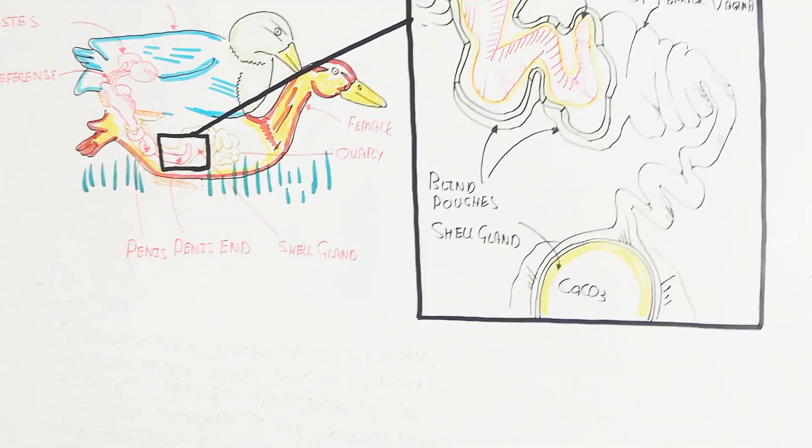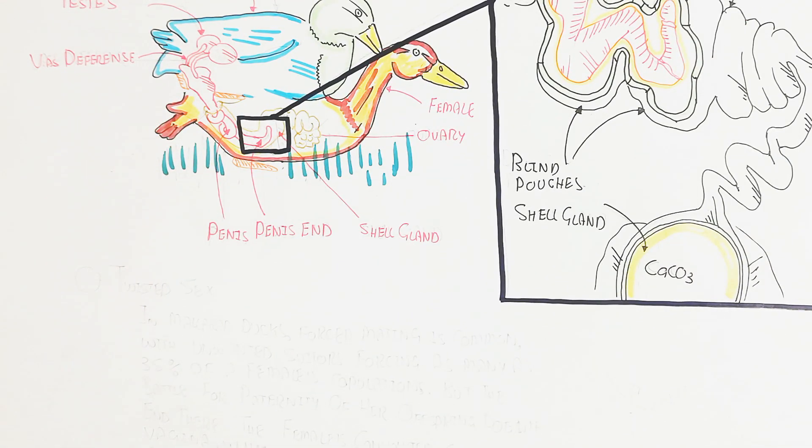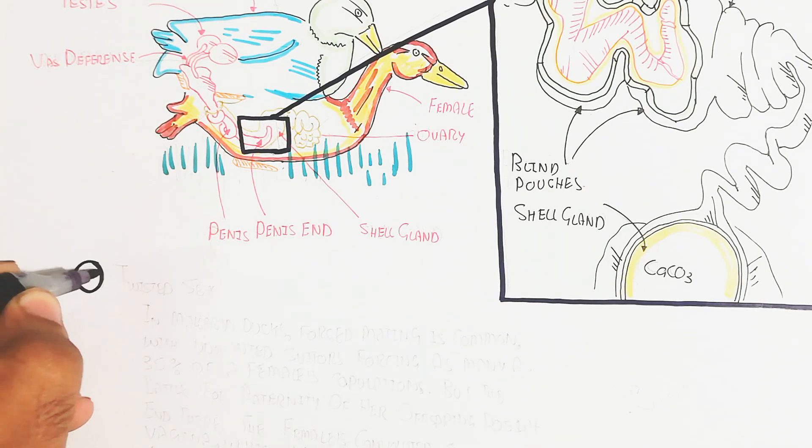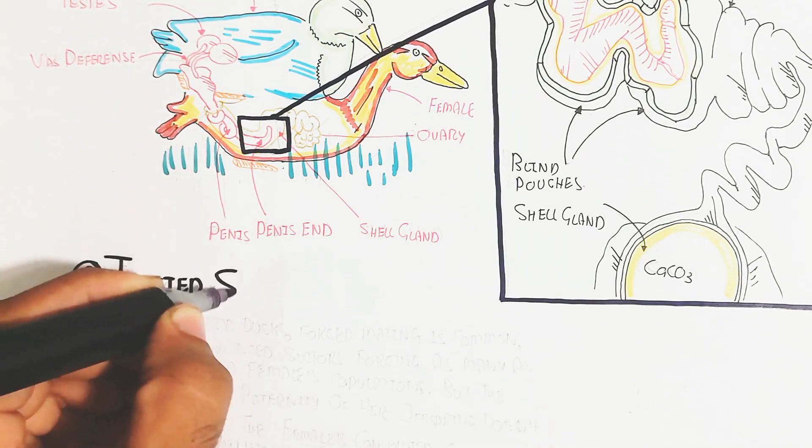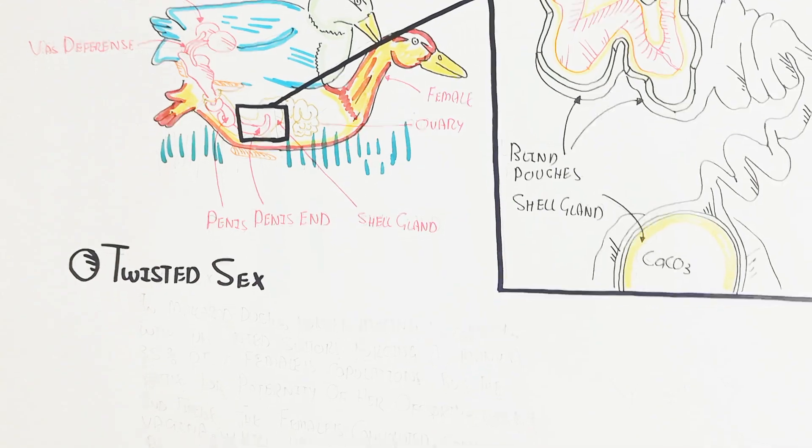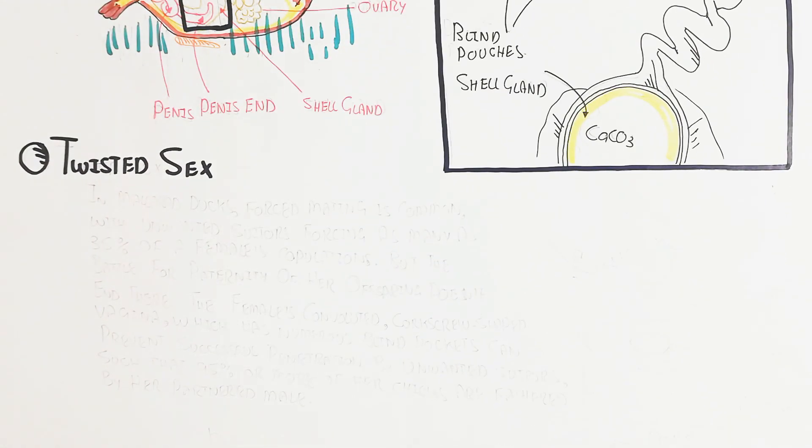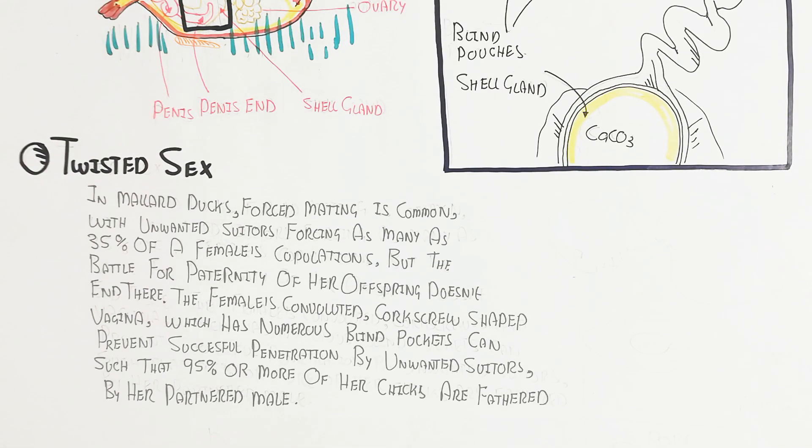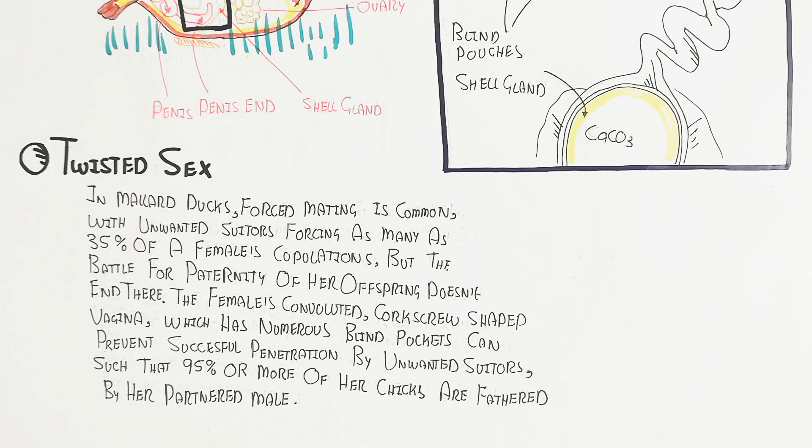Let's understand twisted sex. In mallard ducks, forced mating is very common with unwanted suitors - males who want to force sex on the female - forcing as many as 35% of the female's copulations.